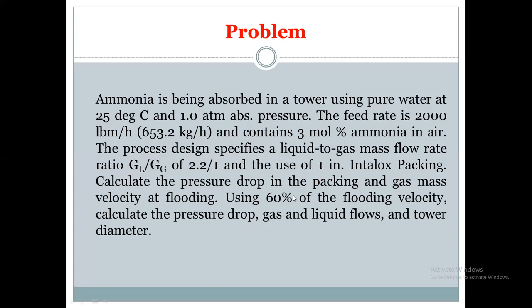As an application of the flooding concept to determine how big our gas absorption tower or stripping tower is, we have this particular problem. Ammonia is being absorbed in a tower using pure water at 25 degrees Celsius and 180 mmHg pressure absolute. The feed rate is 2,000 pound mass per hour, which is 653.2 kilogram per hour, and it contains 3 mole percent ammonia in air.